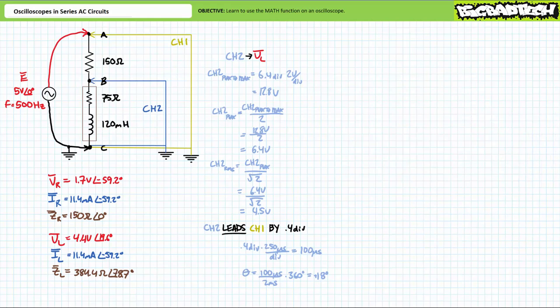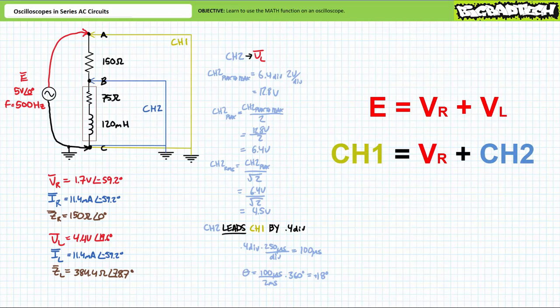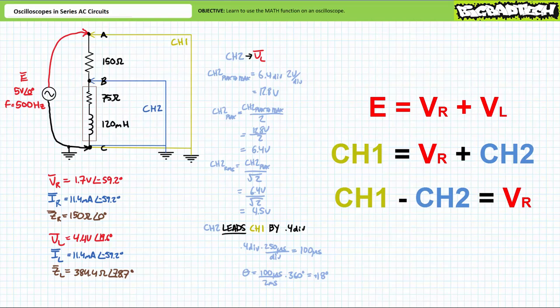How does one measure voltage across the first element in this series configuration — in this case the resistor? Recall the dramatic foreshadowing of Kirchhoff's voltage law: the sum of voltage rises for any closed loop must equal the sum of voltage drops. For this series AC circuit, E equals VR plus VL. By measuring source voltage on channel 1 and voltage across the inductor on channel 2, if we subtract channel 2 from channel 1 — i.e., E minus VL — we effectively obtain voltage across the resistor VR. Modern oscilloscopes like the Tektronix TBS1032B offer math functions that can easily perform this operation, and can simultaneously display the results with the other two waveforms.